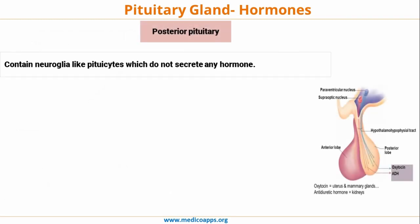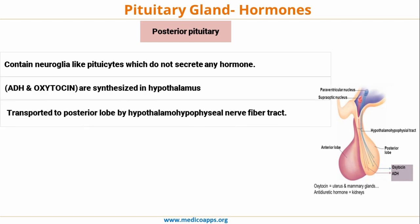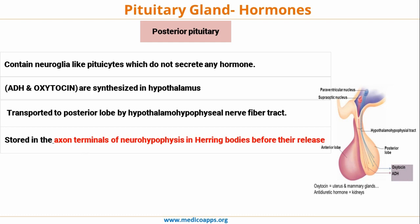The posterior lobe contains neuroglia-like cells called Pituitocytes, which do not secrete any hormones. ADH and Oxytocin are synthesized in the Hypothalamus and transported to the posterior lobe via the Hypothalamo-Hypophysial nerve fiber tract. They are stored in the Neurohypophysis in Herring's Bodies before being released into the systemic circulation. So ADH and Oxytocin are produced by the Hypothalamus, not the Pituitary gland.